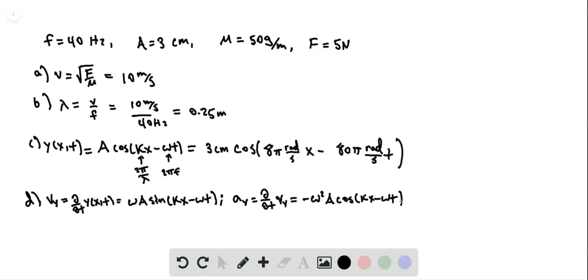And so this whole quantity here attains a maximum, so cos has its extrema at plus or minus 1 here. And so a max is going to be omega squared a, which is equal to 1,890 meters per second squared.